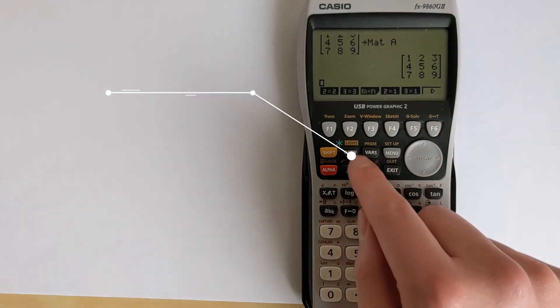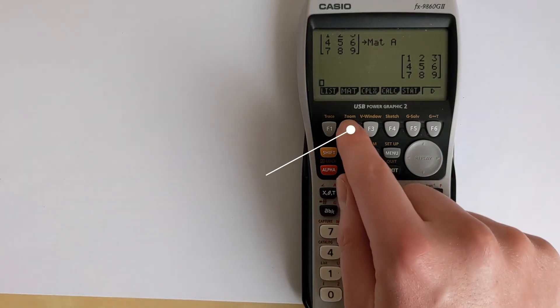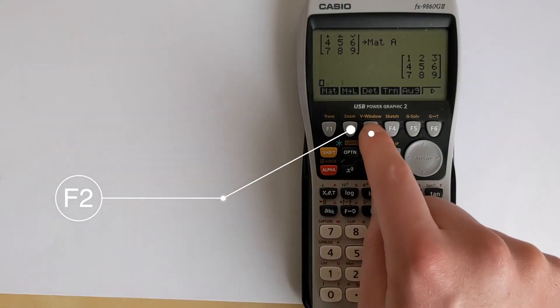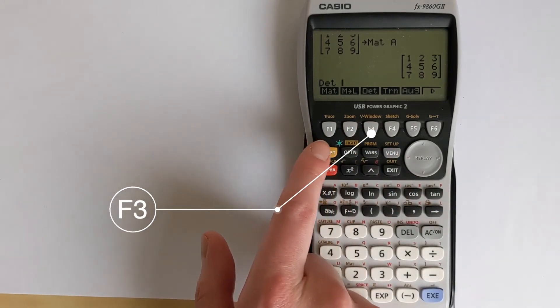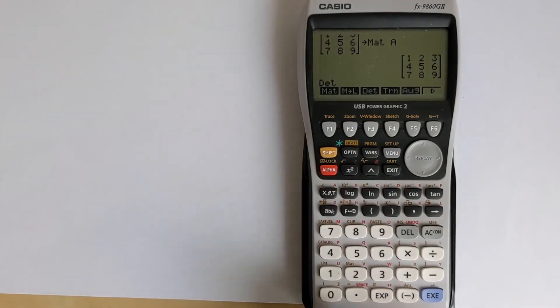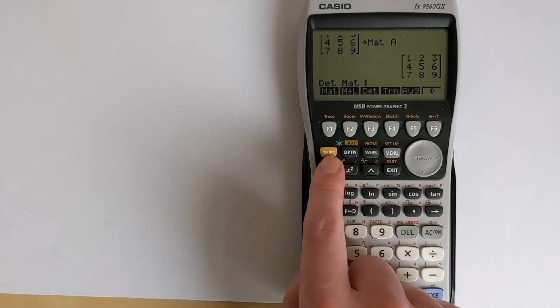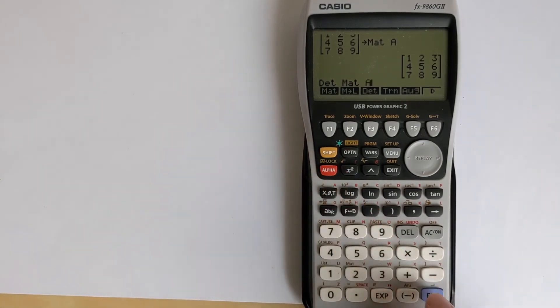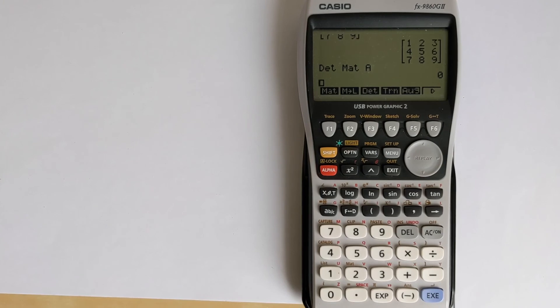You can then go into the option menu, back to matrix, determinant, and then you can access from the memory matrix and then alpha for A. And then you can press equals, and that will calculate the determinant for a matrix you've saved to the memory.